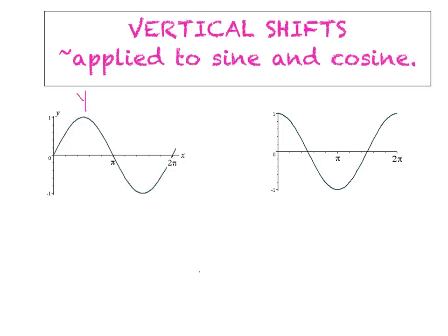Over here we've got the sine curve on the left. What makes the sine curve special is where it starts — right at the origin. So we have root number 1, then our max, then root 2, then our min, and then we finish with our third root. The sine curve over the course of one cycle has three roots, and they'll go in that order unless we put a negative in front of the sine, which reflects it over the x-axis.